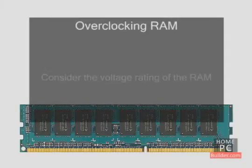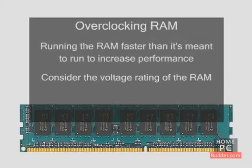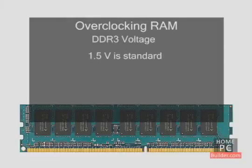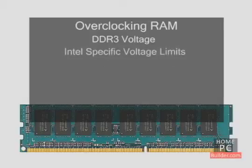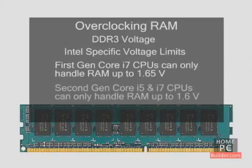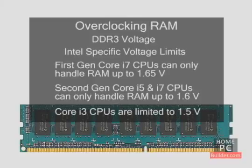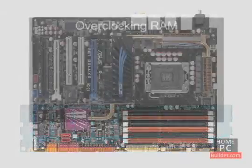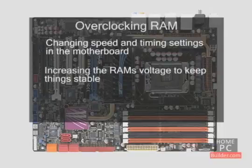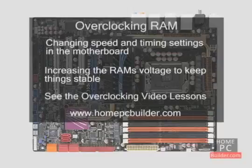If you're planning to try overclocking the RAM, you might also look at the voltage rating. Overclocking means running the RAM faster than it's meant to be run to get more performance. The standard voltage of DDR2 RAM is 1.8 volts, and you can find RAM that will run up to 2.4 volts. The standard voltage for DDR3 RAM is 1.5 volts, and you can find RAM that will run up to 2 volts. With Intel's first-generation Core i7 CPUs, RAM voltage is limited to 1.65 volts; on second-generation Core i7s and i5s it's limited to 1.6 volts; and on Core i3 CPUs it's limited to 1.5 volts. To overclock, you'll increase speed using settings in the motherboard's BIOS and up the voltage to keep the system stable.